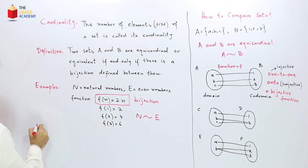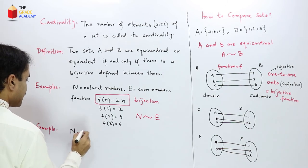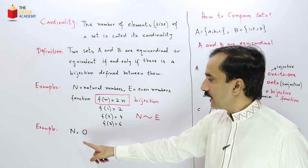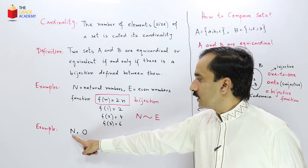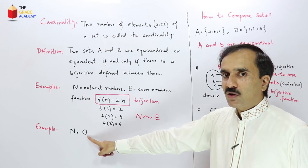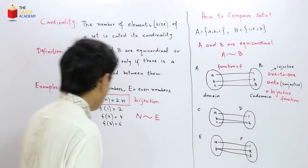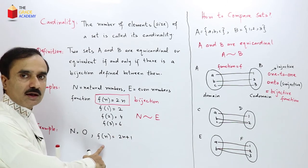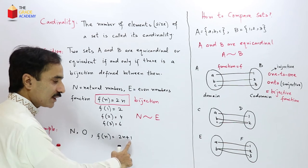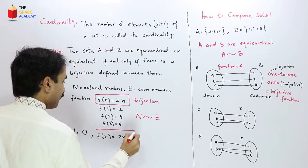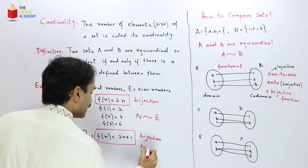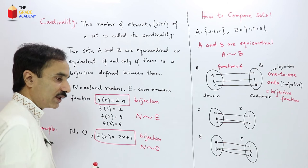Similarly, consider the set of natural numbers and the set of odd numbers. Again, the set of odd numbers is a subset of the natural numbers, but we can define a bijective mapping between them. Consider the function f(n) = 2n + 1, which is a mapping from the set of natural numbers to the set of odd numbers. This is again a bijective mapping. Therefore, the set of natural numbers and the set of odd numbers are also equicardinal or equivalent.